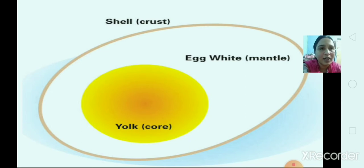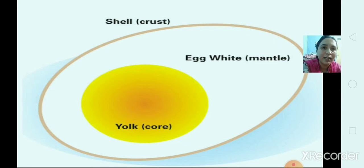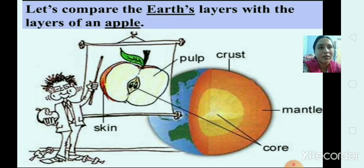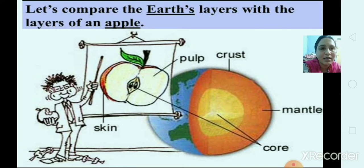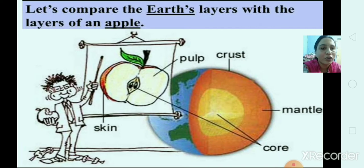So you can say that the egg has three layers: the outer layer, the middle layer, and the inner layer. The outer layer is the shell, the middle layer is the egg white, and the inner layer is the yolk. In the same way, an apple also has three layers: the skin, the pulp, and the core — where the core contains the seed. In the same way, our earth also has three layers, just like an egg or an apple.